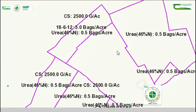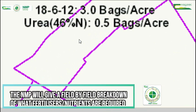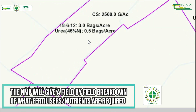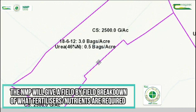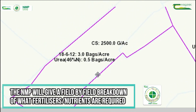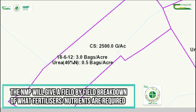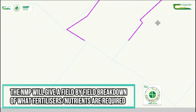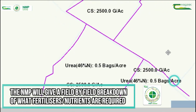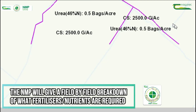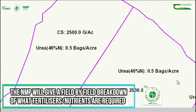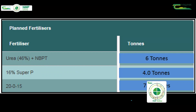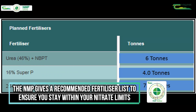Using NMP online, your advisor will tailor a plan for your farm needs. The fertilizer plan will show what fields need lime, organic manures, P and K compounds, and this combined will give a full list of fertilizers for the farm for the year to ensure you stay within DAFM limits.